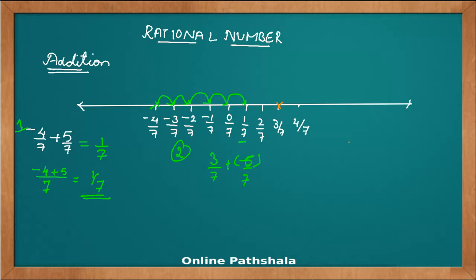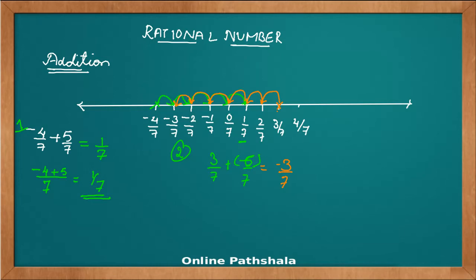We have 3 by 7 on the number line. The rule is: if you have a negative number to be added to a positive number, we jump on the left hand side. So we jump 1, 2, 3 — that's already minus 3 by 7 — then 4, 5, and 6. The answer we get on the number line is minus 3 by 7.